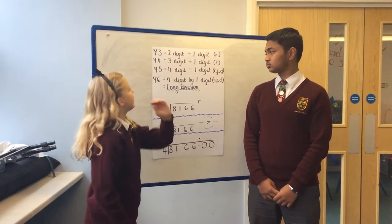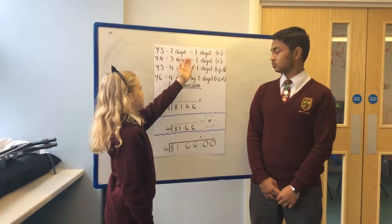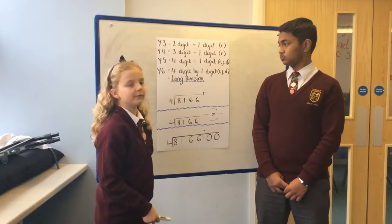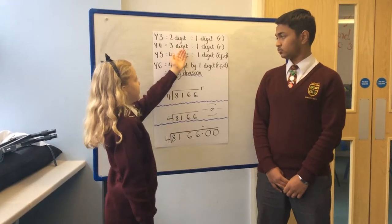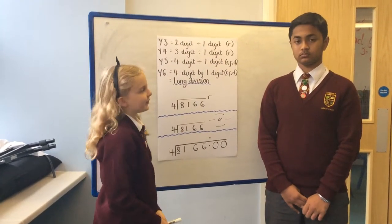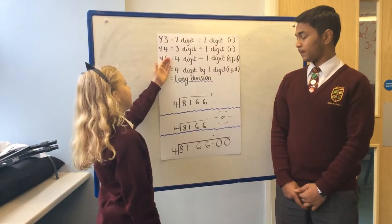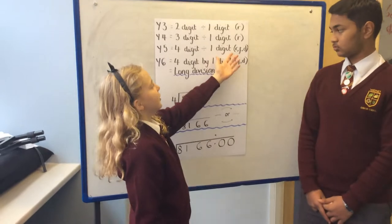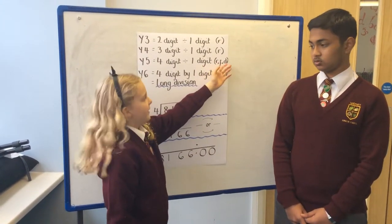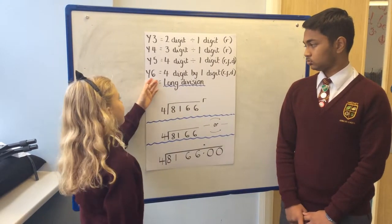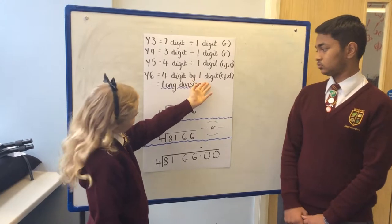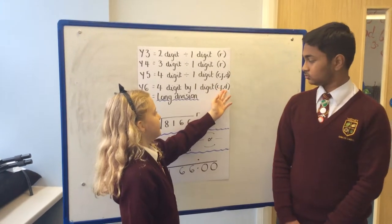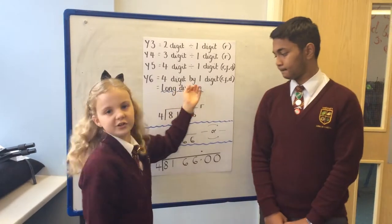In Whitney, our maths policy states that in Year 3 you must be able to do two digits divided by one digit numbers, and you show your remainders using an R. In Year 4, you have to do three digits divided by one digit numbers, again showing your remainder with an R. In Year 5, we do four digits divided by one digit, but this time we show our remainders using either R, a fraction, or a decimal. And then in Year 6, you do four digits divided by one digit and show it with the same as Year 5 with an R, a fraction, or a decimal, but we also do long division which will be shown in another clip.